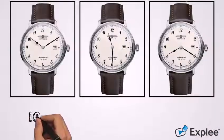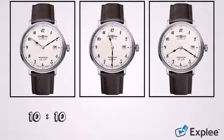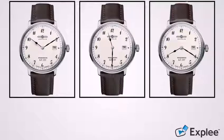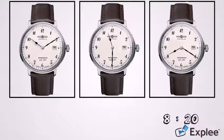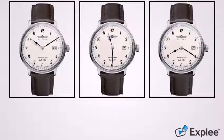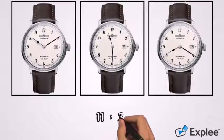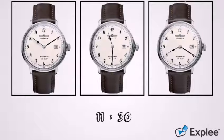In one photo, the watch was set at 10 past 10, which was supposed to resemble a smiling face. In the second one, it was set at 20 past 8, which was supposed to look like a sad face. And in the third one, it was set at half past 11, as a neutral time setting.